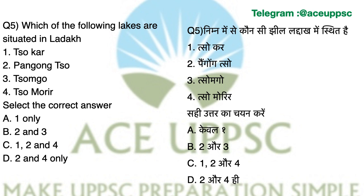Question number 5. Which of the following lakes are situated in Ladakh? The lakes given are: 1. Tasokar, 2. Pangong, 3. Tsomgo (Changu Lake), 4. Tso Moriri. The answer is C: 1, 2, and 4. Tsomgo lake is found in Sikkim — also called Changu Lake — so it is not in Ladakh.